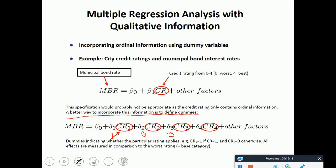If your credit rating is 2, then the second dummy is 1, but the other one is 0. If your credit rating is 3, the third dummy would be 1, but the rest dummies would be 0. That way, you can capture the qualitative information for each credit rating.